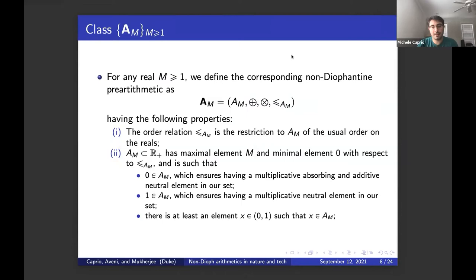The first class that I present, I call it A_M. For any real M greater or equal than one, we define the corresponding non-Diophantine pre-arithmetic as this. I'll call the two operations O plus and O times. The order relation is the restriction to A_M of the usual order on the reals. A_M is a subset of the positive reals that has a maximal element and a minimal element with respect to the order relation. The maximal element is going to be M, the minimal is going to be zero. We require that zero belongs to A_M to ensure having a multiplicative absorbing and additive neutral element.